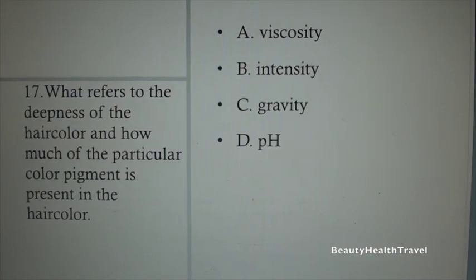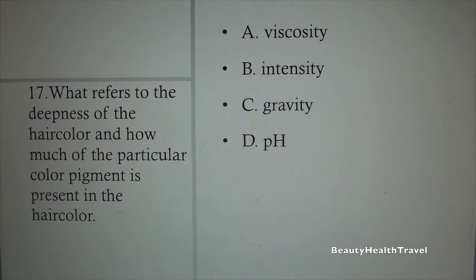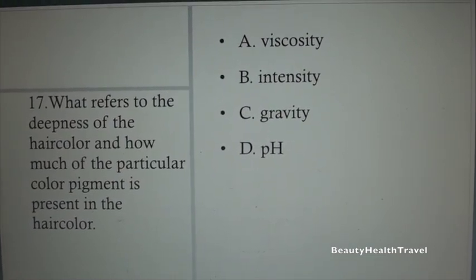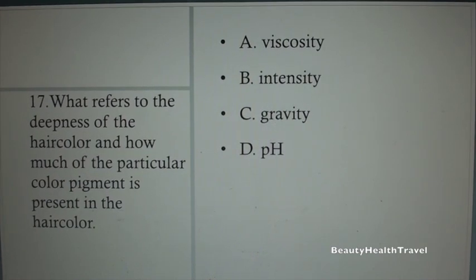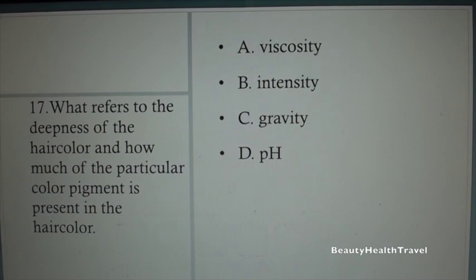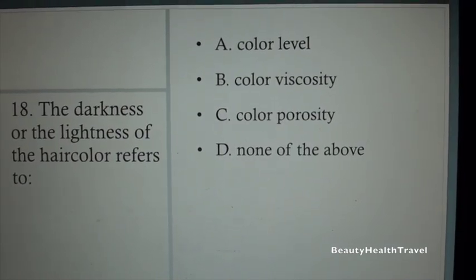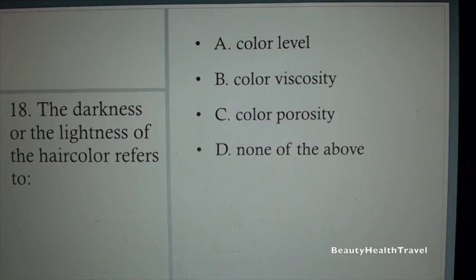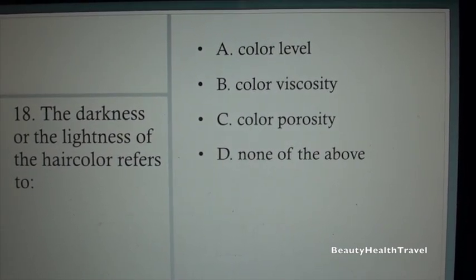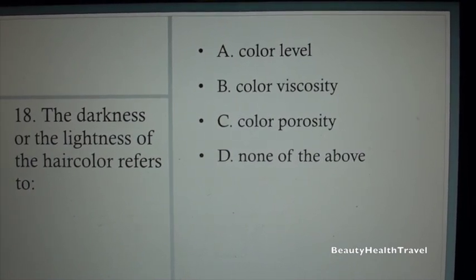Question 16: Blue color is the strongest primary color that has a cool tone. Adding blue tone colors to any hair color will make them deeper and darker: A. True, B. False. Question 17: What refers to the deepness of the hair color and how much of the particular color pigment is present? A. Viscosity, B. Intensity, C. Gravity, D. pH.